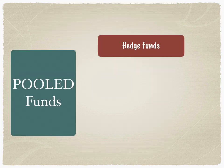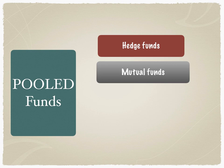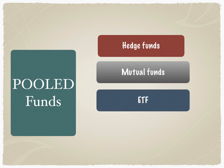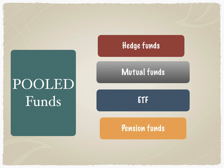A pooled fund therefore could be either a hedge fund, a mutual fund, an ETF — that's an exchange traded fund — or a pension fund. All of these are examples of pooled funds where capital from multiple investors is pooled into an investment pool, and then the investment pool makes investments into different asset classes like equities, commodities, bonds, etc.